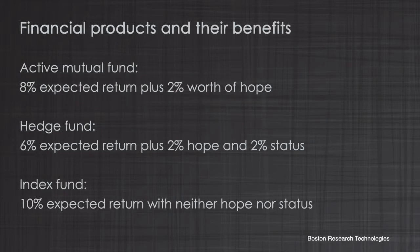For example, if we look at financial products: active mutual funds have an 8% expected return plus 2% worth of hope. Hedge funds may have a 6% expected return plus 2% of hope and 2% status. And index funds offer a 10% expected return with neither hope nor status. The financial product personality or brand personality is extremely important, particularly if you're managing products or brands.